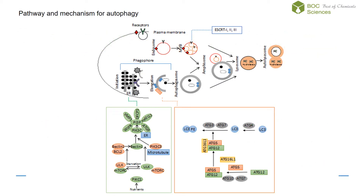The core process for autophagy is the formation of a 300–900 nanometer diameter double membrane organelle, the autophagosome. Autophagosome biogenesis can be divided into the following stages.